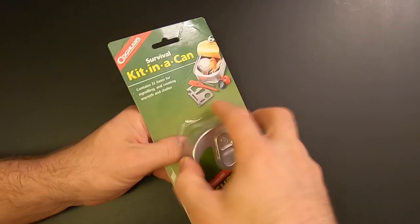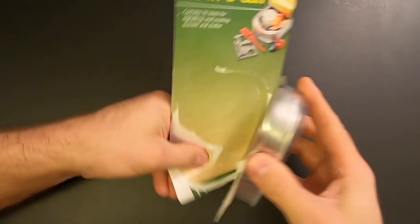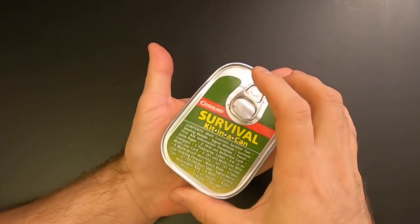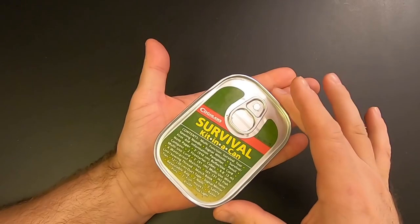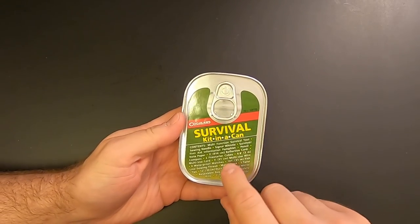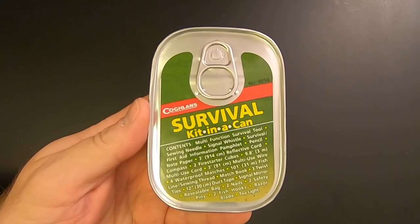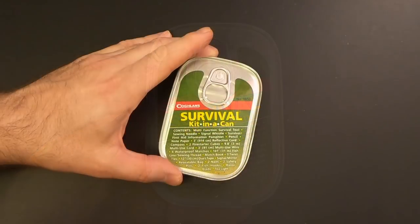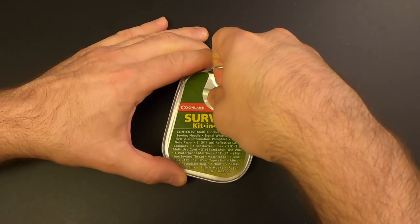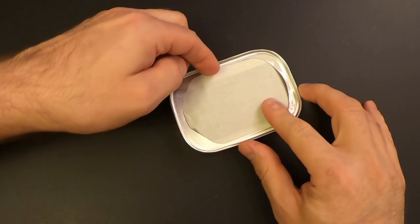So there it is. And here's my hand. So you can see about how big this thing is. It's literally a sardine can that they've made into a survival kit. And they've got a list of all the contents on the lid as well. You can pause and read it if you want. All right, so let's crack it open and take a look at what's inside.